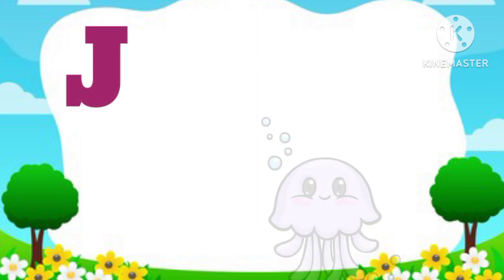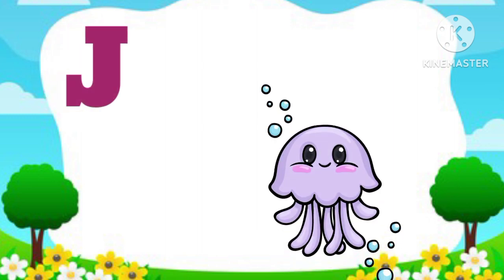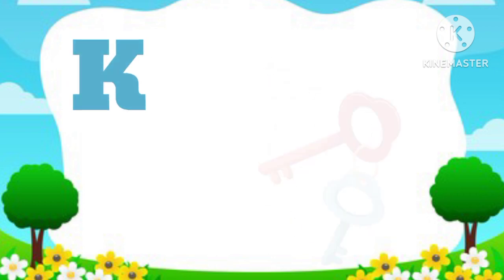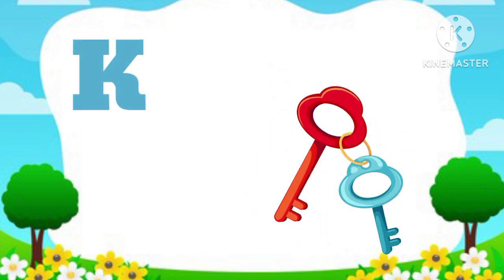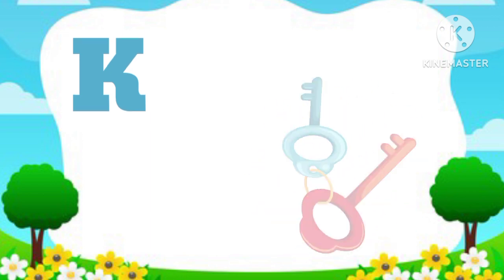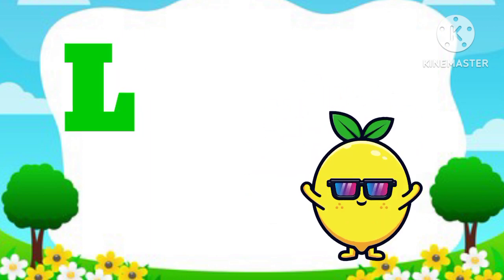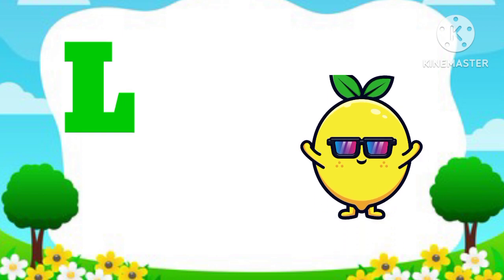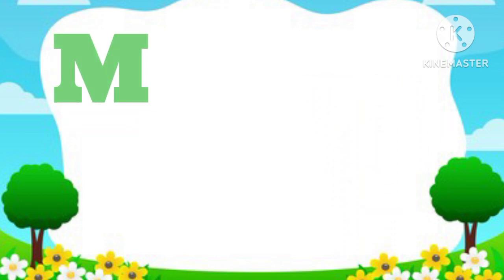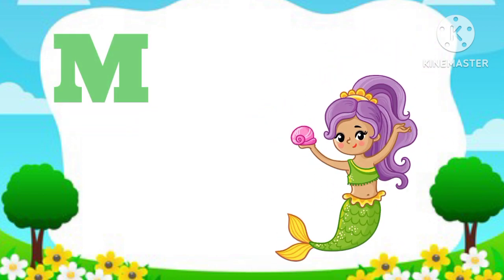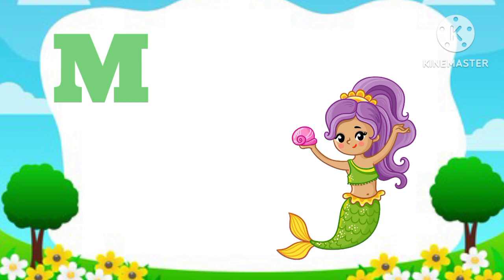J. J is for Jellyfish. K. K is for Key. L. L is for Lemon. M. M is for Mermaid.